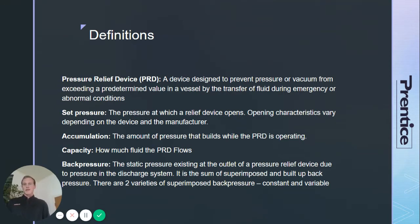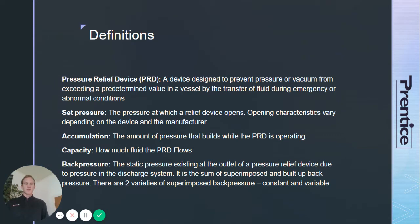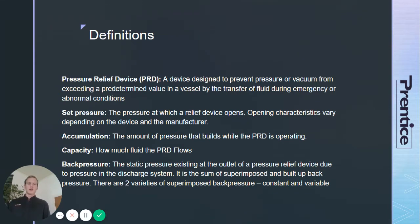Set pressure is the pressure at which the device opens — opening characteristics vary depending on the device and the manufacturer. Accumulation is the amount of pressure that builds in the vessel while the device is open, after you've reached your set pressure. Capacity is the amount of fluid that flows per unit of time through the device, and back pressure is the amount of pressure that exists at the outlet of the device.